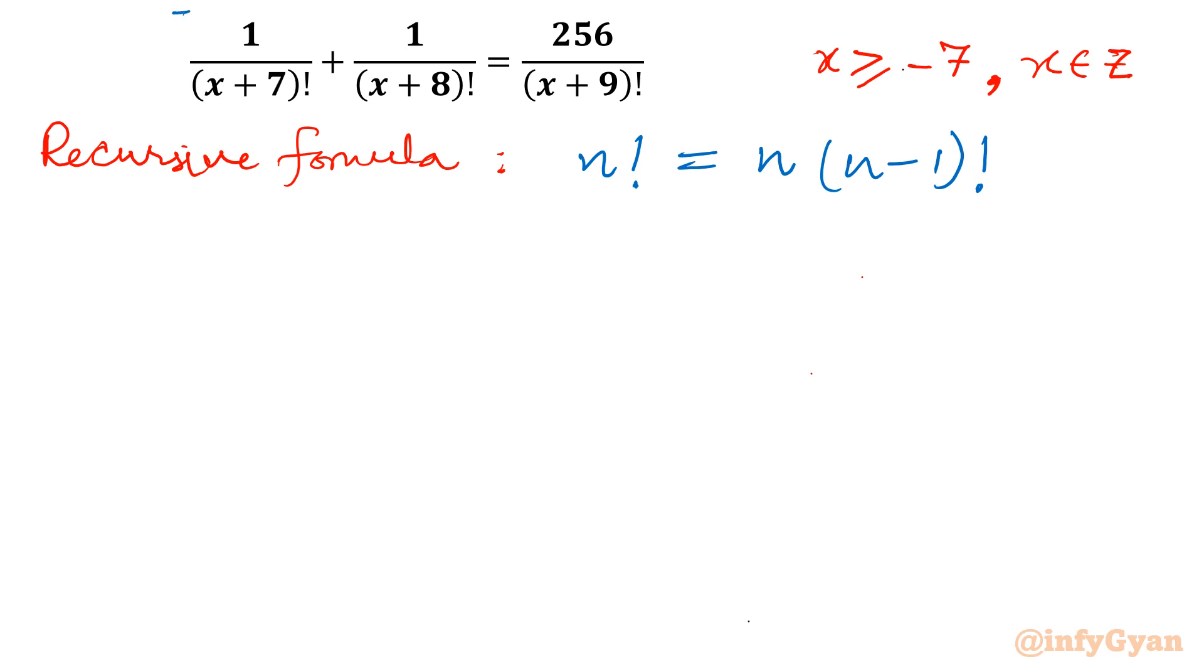Let's multiply the given equation by x plus 9 factorial on the right hand side also. Once I will multiply, then x plus 9 factorial will get cancelled out. So what will be left, in the left hand side, it would be x plus 9 factorial.